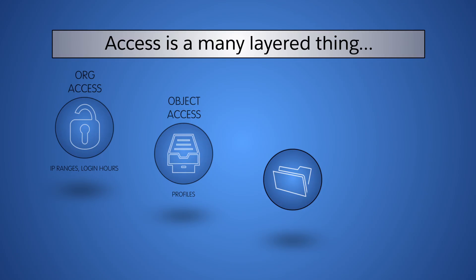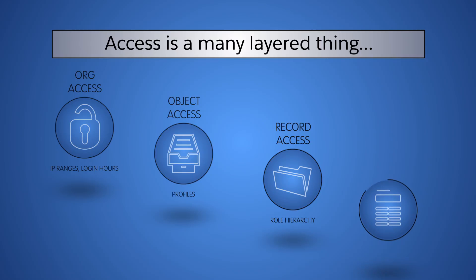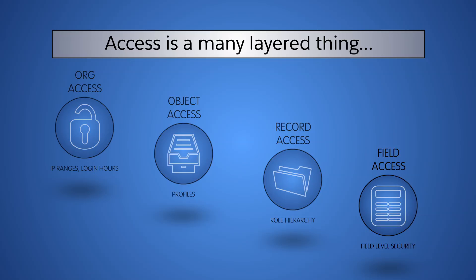The next layer determines which records users have access to. For example, the US sales director needs to see the opportunity records in the US region. And finally, there's field-level security. There may be individual fields that contain information of a confidential nature that should only be visible to certain profiles. For example, a field that displays commissions should be hidden from our call center reps.